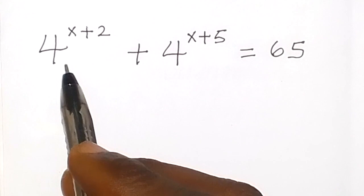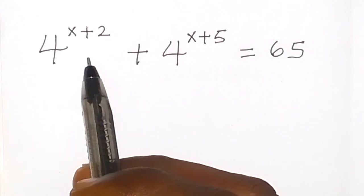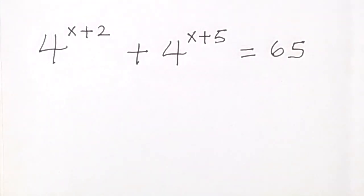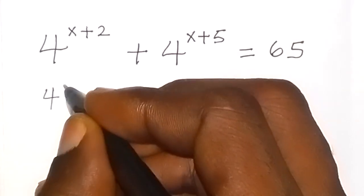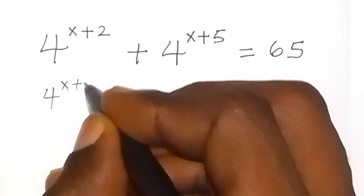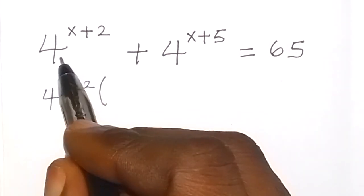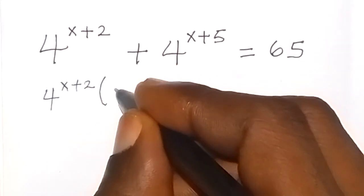Let's factor 4 raised to power x plus 2 out here. We are going to have 4 raised to power x plus 2, then into brackets. When that divides this, it remains one here.